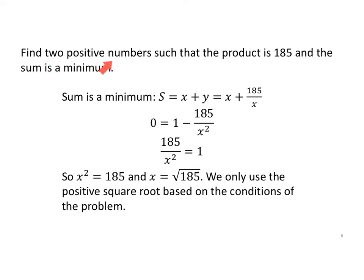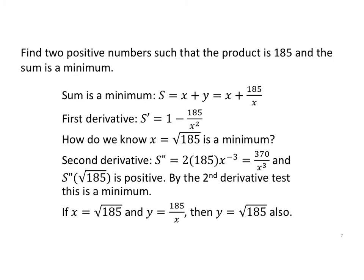I only have to worry about the principal square root, the positive square root, because of the problem. So the sum is a minimum. How do I know for sure this is a minimum? I could find the second derivative, which is 2 times 185x to the negative 3, also known as 370 over x cubed. And since the second derivative at the square root of 185 is positive, this is a minimum.